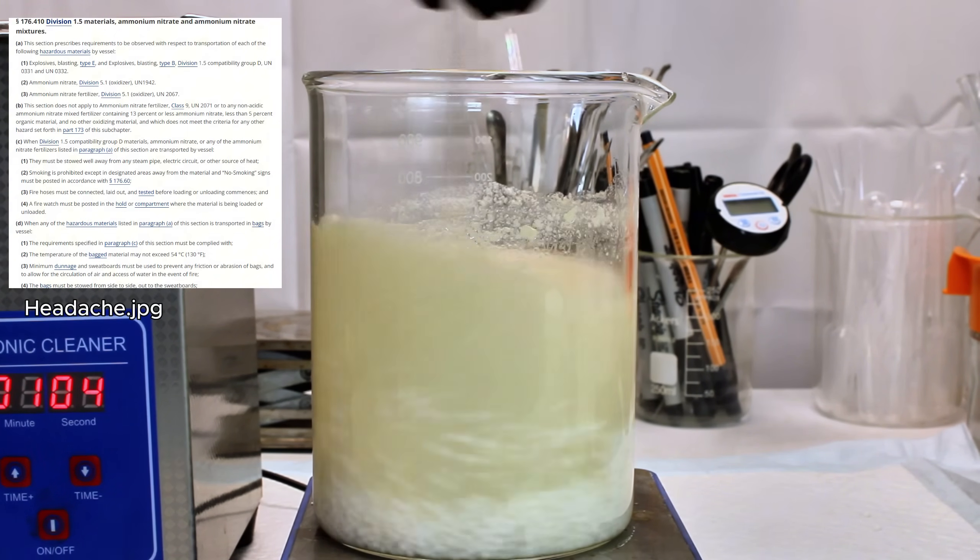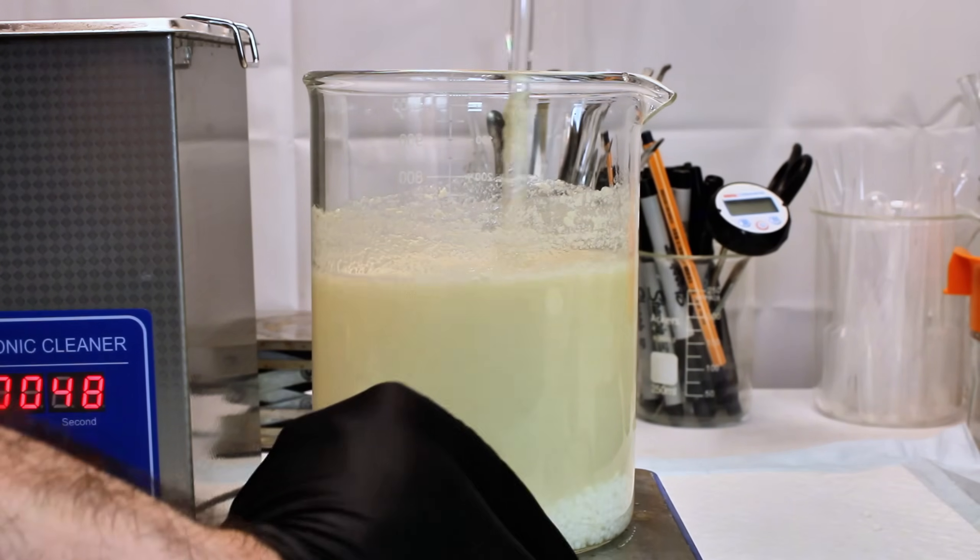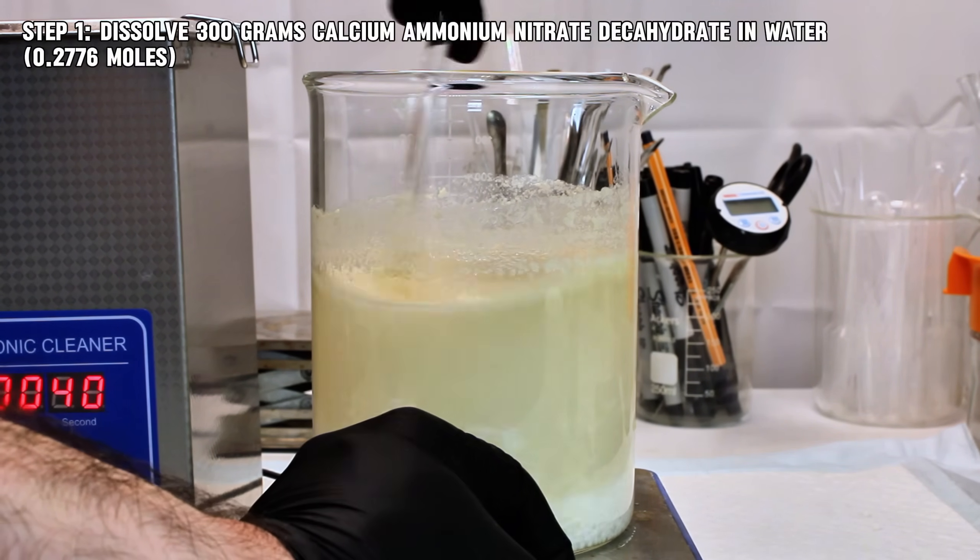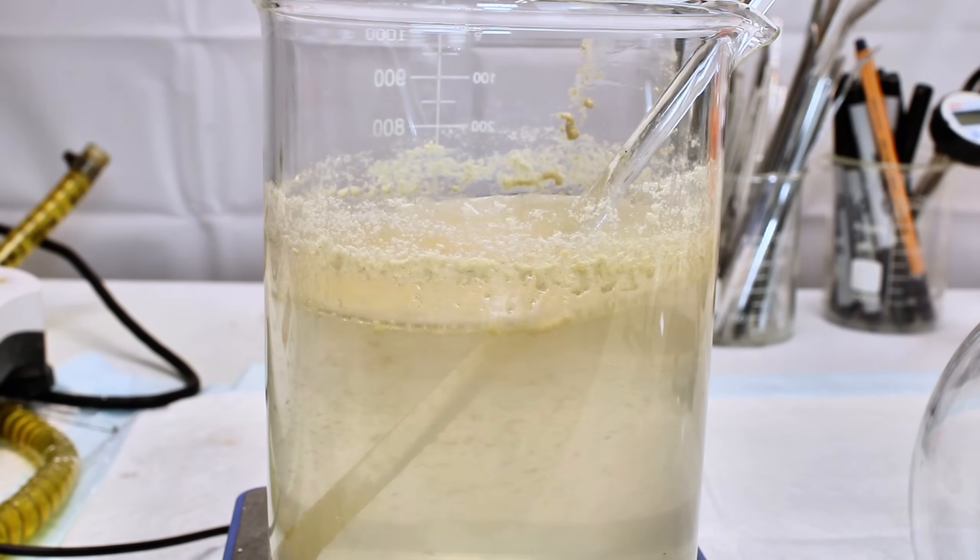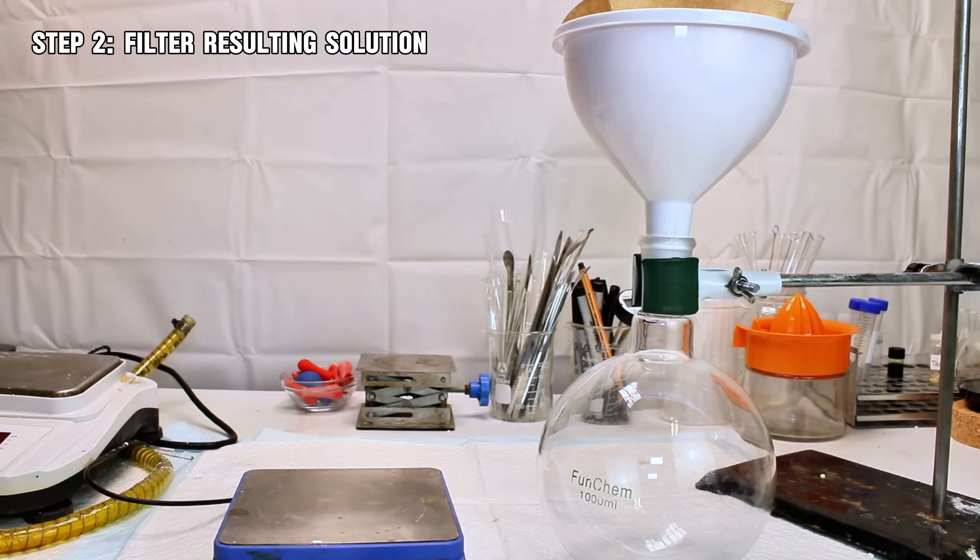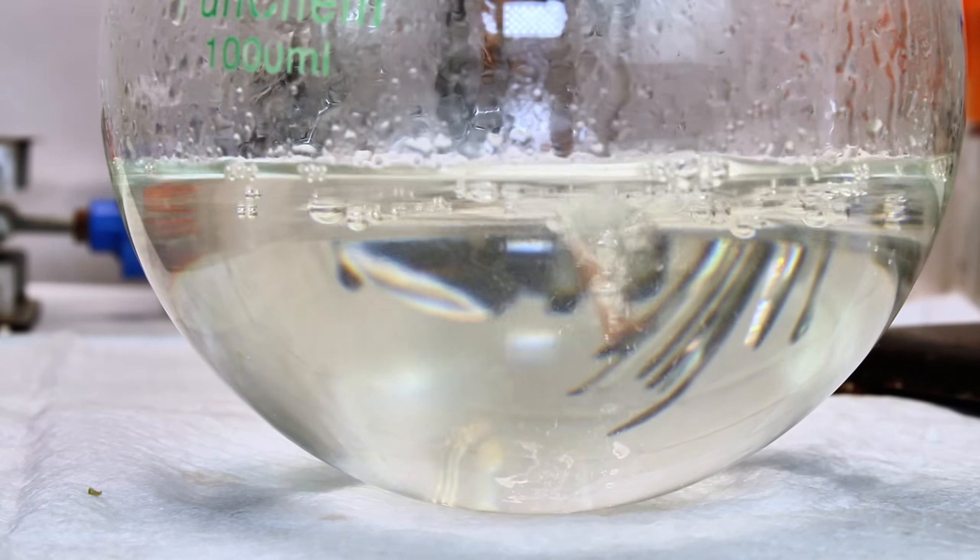In any case, to make calcium ammonium nitrate into calcium nitrate, the first thing I did was to weigh out about 300 grams and dissolve it in some distilled water. Once the calcium ammonium nitrate had totally dissolved, a bunch of this disgusting oily brown crap floated to the top, which I was able to remove by passing it through a coffee filter.